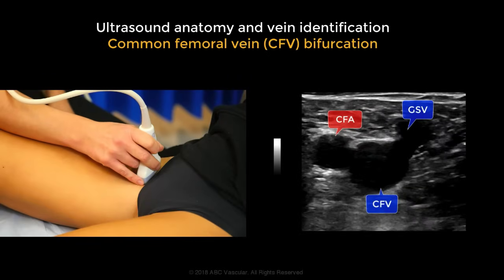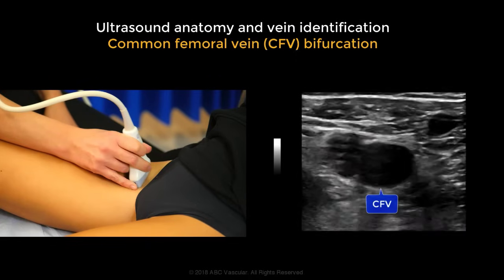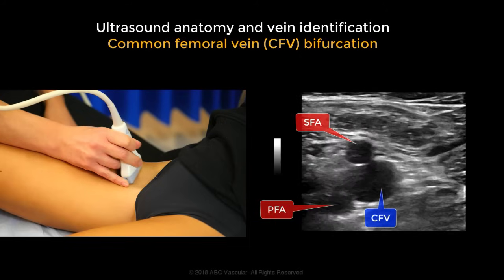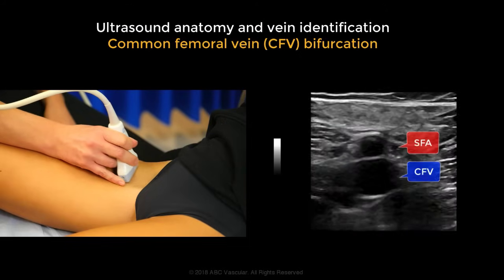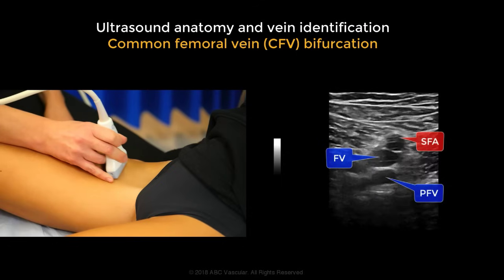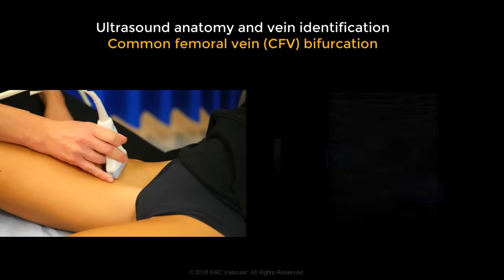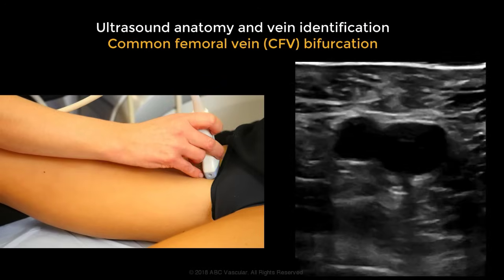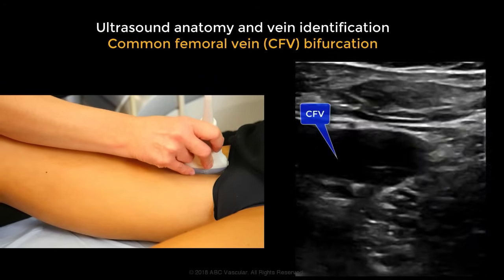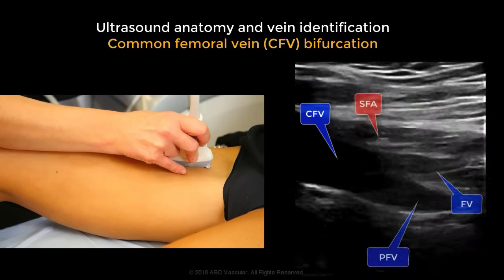Starting from the groin, move the transducer further down to identify the venous femoral bifurcation. We can see the arterial bifurcation first, and then more distally there is the venous femoral bifurcation, where we can see the femoral vein and the profunda femoral vein. By moving the transducer back to the groin using a longitudinal view, we can better appreciate the anatomy of the femoral bifurcation, seeing the common femoral vein dividing into the femoral vein and the profunda femoral vein.